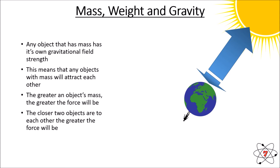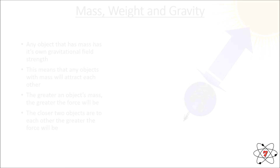The closer two objects are to each other, the greater that force of gravity is going to be. A person standing on the Earth is attracted to the Earth's surface by gravity — they're not attracted towards the Sun despite the Sun's stronger gravity, because they are closer to the Earth. The Earth is also attracted a very small amount to the person, because the person has a little bit of mass — but it's a negligible amount because a person's mass compared to the Earth is minuscule.